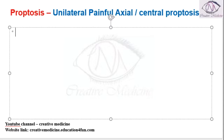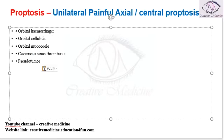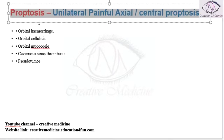The causes of unilateral painful axial or central proptosis include the following: orbital hemorrhage, orbital cellulitis, orbital mucocele, cavernous sinus thrombosis, and pseudotumor.